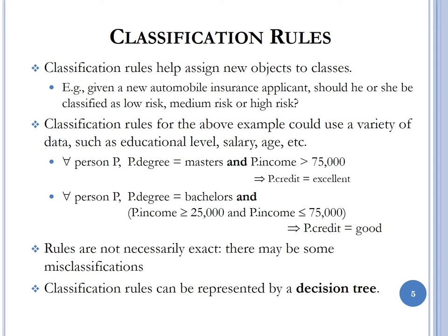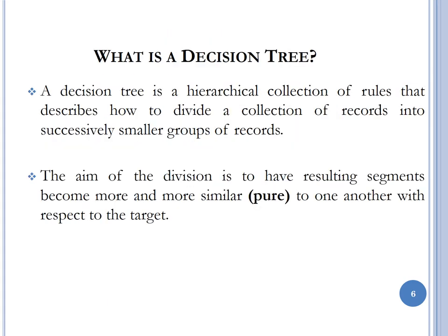Classification rules can be presented as a decision tree, and that is the methodology we are going to use. A decision tree is a hierarchical collection of rules that describes how to divide a collection of records into successively smaller groups. The aim of the division is to have resulting segments that are considered pure, because the elements grouped together are more similar than different.